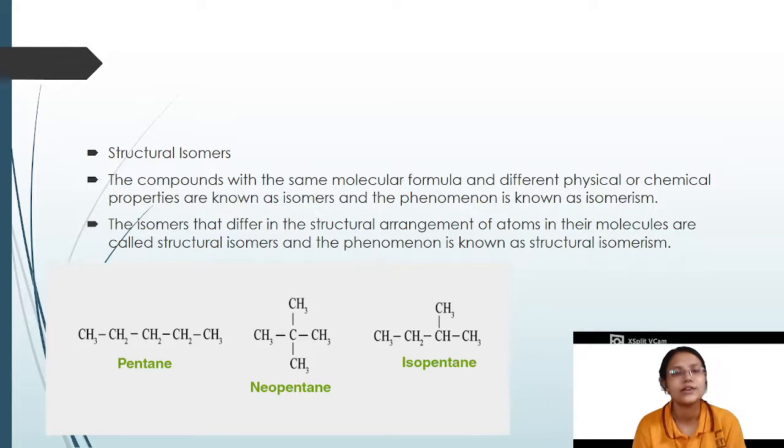Structural isomers. What are isomers? The compounds with the same molecular formula but different physical formulas. Isomer is the same molecular formula, like C5H12, but it has different types of physical or chemical properties. We call it isomer and the phenomenon is isomerism, structural isomerism, which is the same molecular formula but has different branching so that it will exhibit different properties. For example, pentane, neopentane, and isopentane have the same particular formula but different branching.